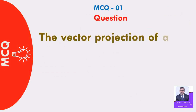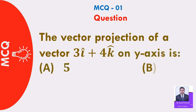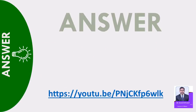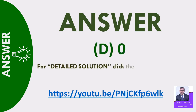MCQ 01: The vector projection of a vector 3i cap plus 4k cap on the y-axis is: A) 5, B) 4, C) 3, D) 0. Answer: D — 0. For detailed solution, click the links given in description.